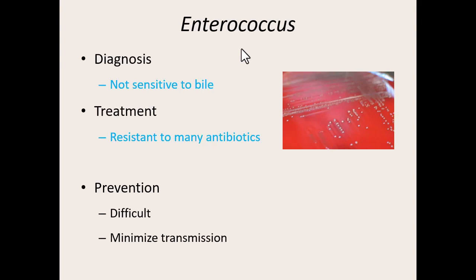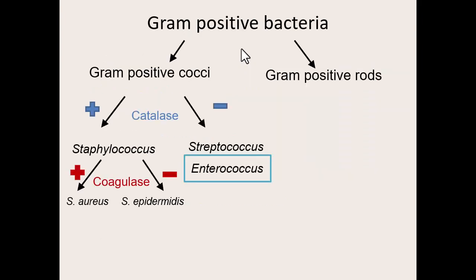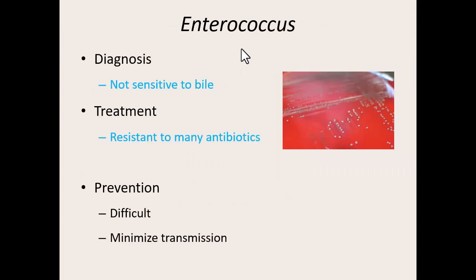Diagnosing Enterococcus: if we put this particular bacteria in bile, it's not going to dissolve — it's not sensitive to bile. Part of the reason it's found in the intestines is that it's evolved to handle bile, whereas strep bacteria do not. So that's one easy way to differentiate: will it grow in the presence of bile, or will it dissolve? That tells us whether it's a strep or an entero bacteria. Prevention is difficult because everyone's a carrier — this thing hangs out in our intestines. Our biggest way to prevent it is to minimize transmission through proper PPE and proper hygiene.